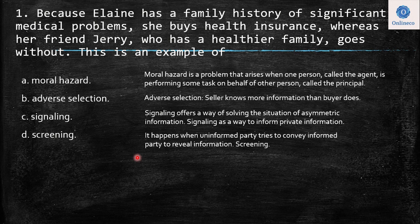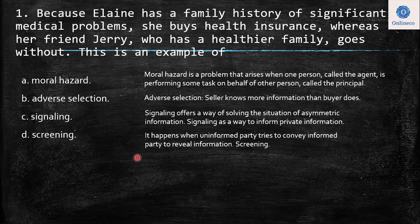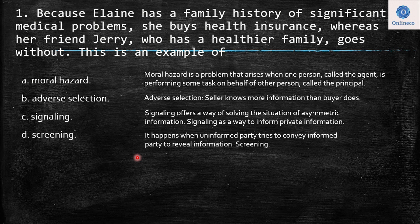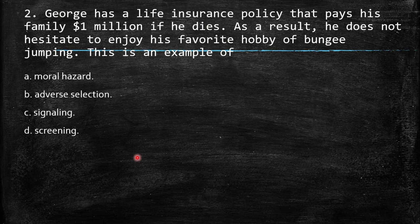In this situation, the seller — which is the insurance company — can have more information than the insurer. But actually it's costly, so it's really hard to have all the information about the insurer. So keep in mind that every time we talk about an insurance company, they face more situations related with adverse selection.